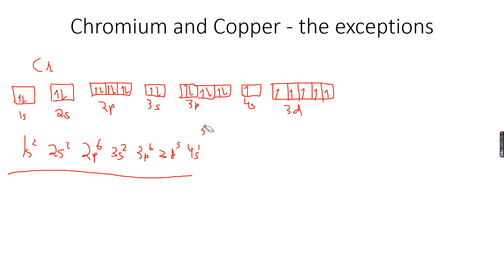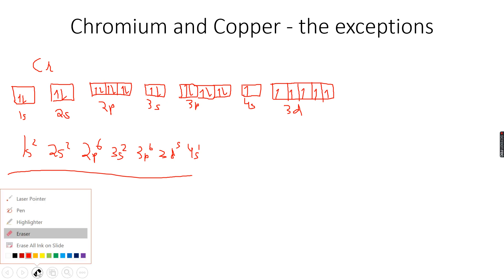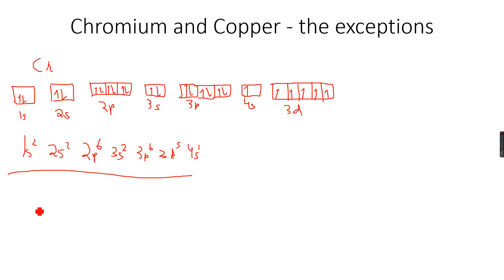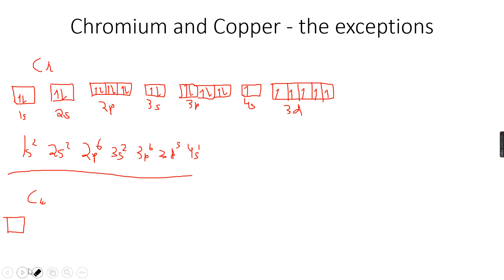Chromium and copper are the only exceptions which have something like this; others will follow the standard rule. Now when we look at copper, it has 29 electrons. Out of these 29, first we'll fill 2 in 1s, so now we're left with 27. Then we'll fill 2 in 2s, so we're left with 25.